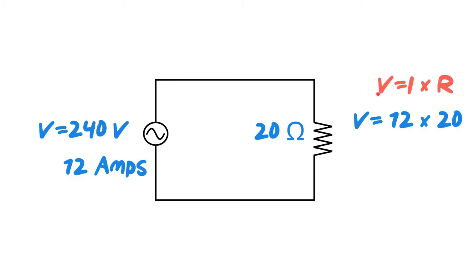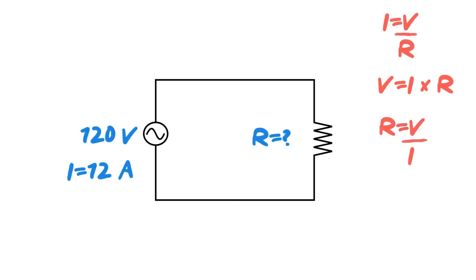Now what if we have 120 volts and we have the current of 12 amps, but we want to determine what the resistance is? Of these three formulas, R is equal to V over I is the one we're going to be looking at. So we've got our voltage, 120 volts, divided by our current—so 120 volts divided by 12 amps will give us what our resistance is. And in this case that works out to be 10 ohms.